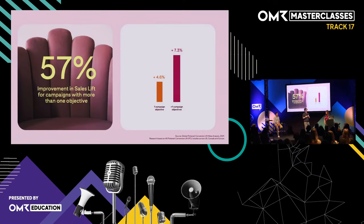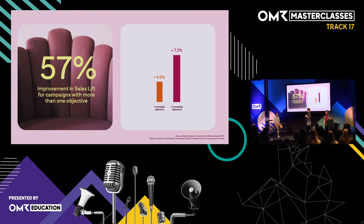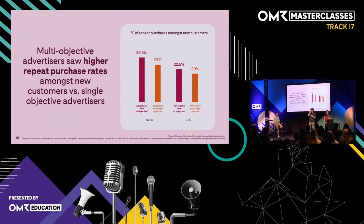Campaign objectives are simply the representation of funnel stages within Pinterest campaign setups. So much for conversion rate — but on Pinterest, people come to get inspired and start a decision-making process, which means it's much about delivering incremental sales. We also see that the full funnel approach has positive impact here. Based on a meta study on conversion lift studies we ran, advertisers running activities on more than one campaign objective saw a 57% increase in sales uplift compared to advertisers active on only one campaign objective.